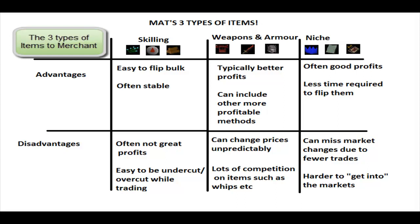For the niche market, I've put anything that isn't as commonly traded — for example, Guthix pages, rares, or Dragon ornaments. The advantages are often good profits and less time required to update offers, maybe only every 10 minutes instead of constantly. The disadvantage is you can miss market changes due to fewer trades and lose money quite easily if you play it wrong. It's also harder to get into the market initially — for example, if you try Merching party hats for the first time, you're probably going to lose money until you learn how it behaves.